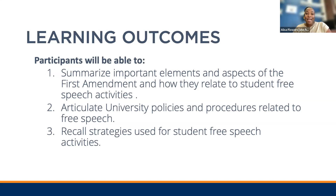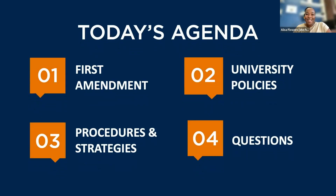Today's learning outcomes: at the end of this session, we anticipate that you will be able to summarize important elements and aspects of the First Amendment and how they relate to student free speech activities, articulate university policies and procedures related to free speech, and recall strategies used for student free speech activities. Our agenda today: Dr. Vigil is going to start out by talking about the First Amendment, then we'll talk specifically about our university policies here on campus, describe some of our procedures and strategies, and then open it up to questions.